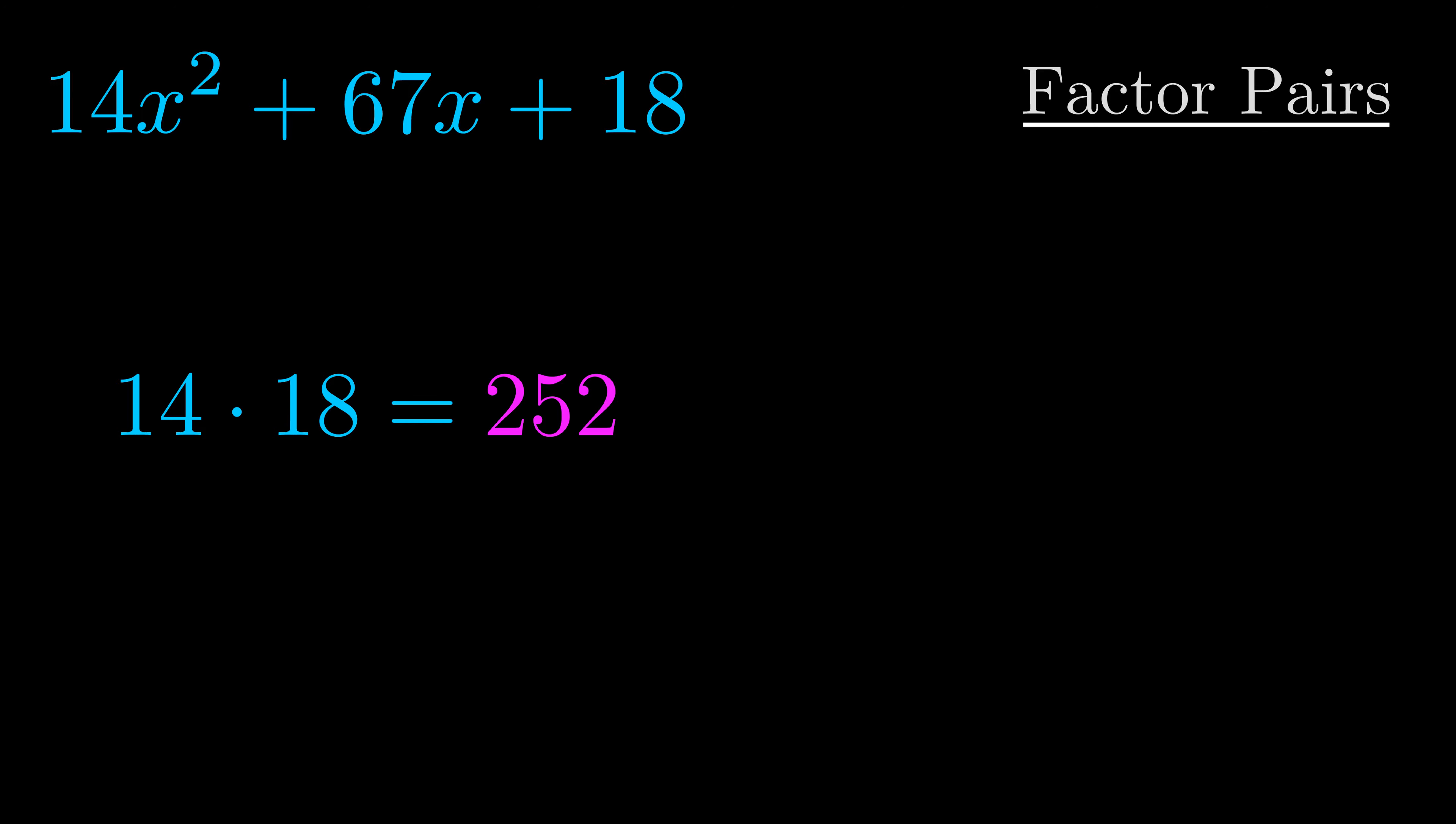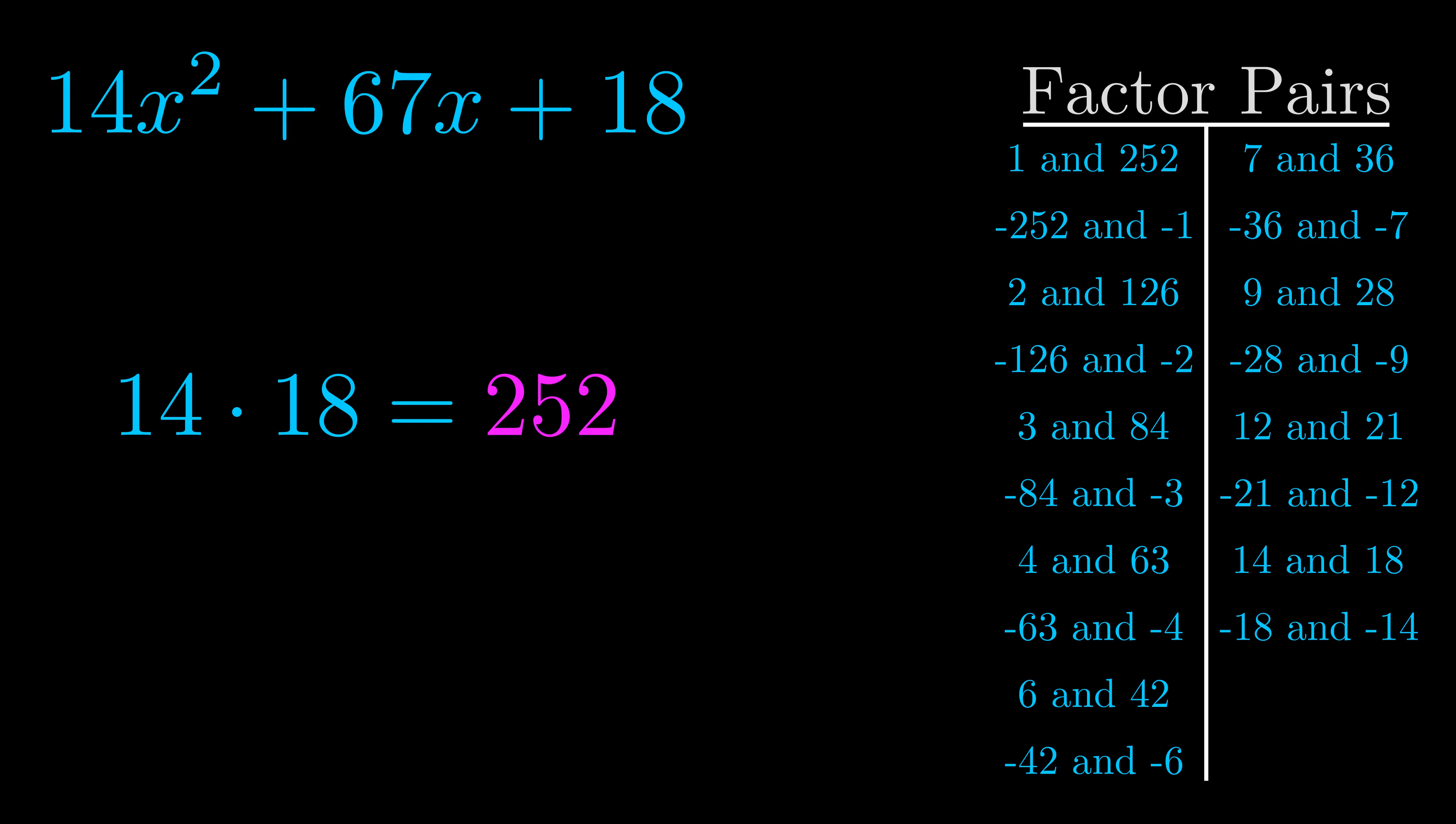Okay here's what I came up with. Now once you have these factor pairs the goal is to find which of these pairs adds to the b value.